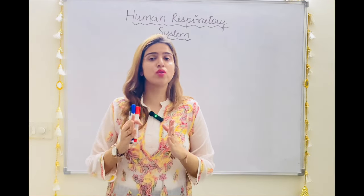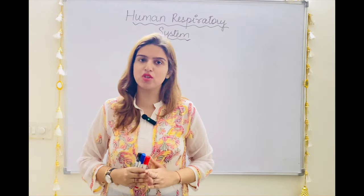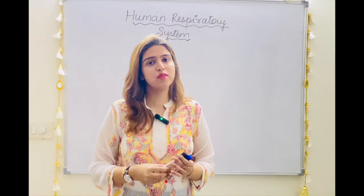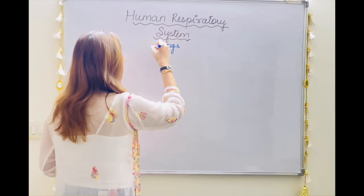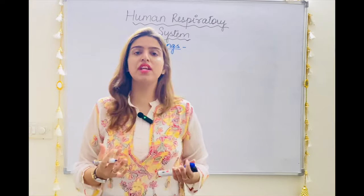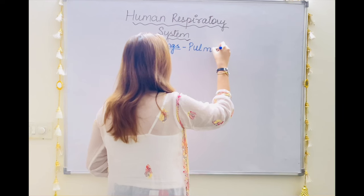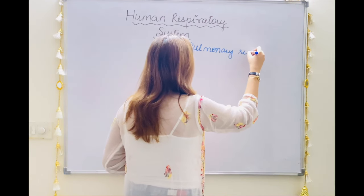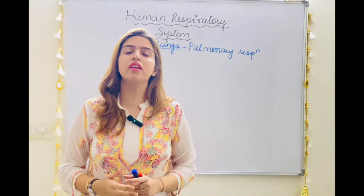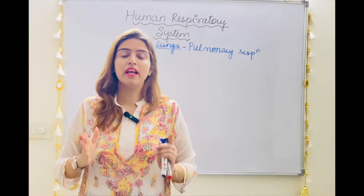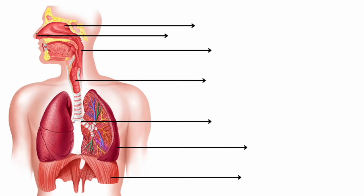In the next video we are going to look at how this respiratory system actually functions. In humans, respiration happens via the lungs and that is why respiration in us is known as pulmonary respiration. This pulmonary respiration via the lungs happens through our respiratory system. Let's look at it with the help of a diagram, step by step.